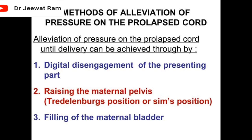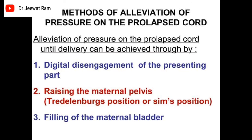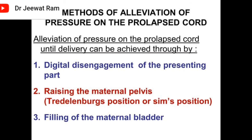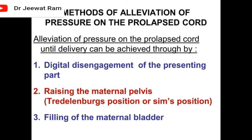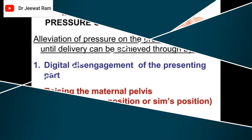Methods of alleviation of pressure on the prolapsed cord until delivery can be achieved include: digital disengagement of the presenting part, raising the maternal pelvis, Trendelenburg position or Sims position, and filling of the maternal bladder.